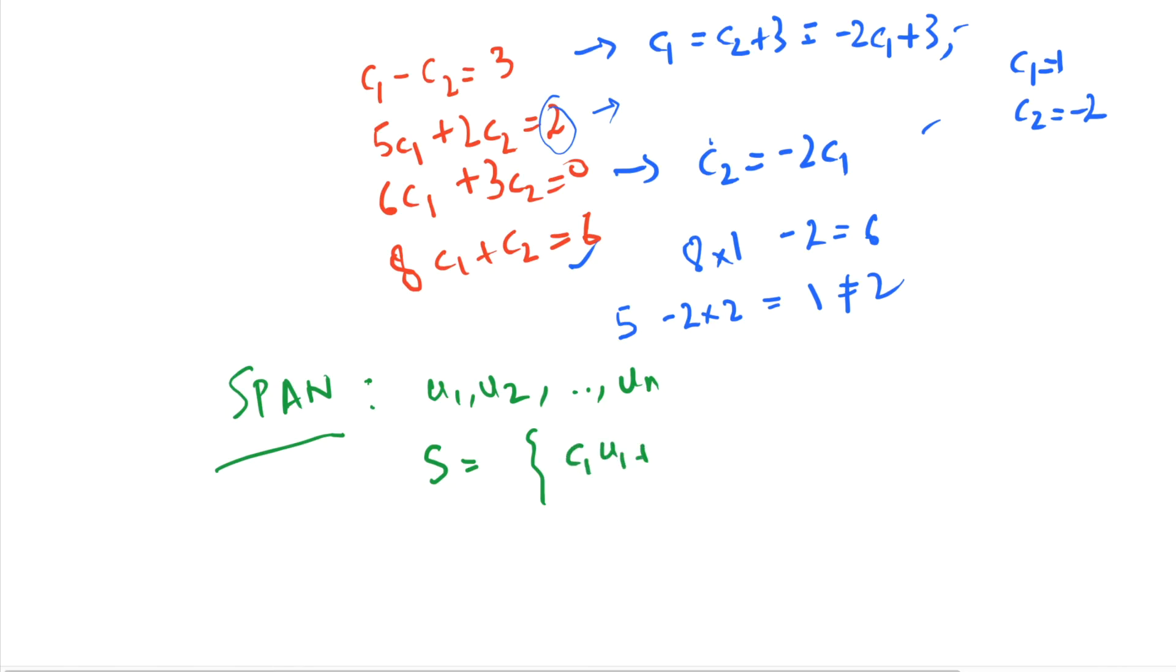the form c1u1 plus c2u2 plus cnun, such that c1, c2, and cn belong to the set of real numbers.